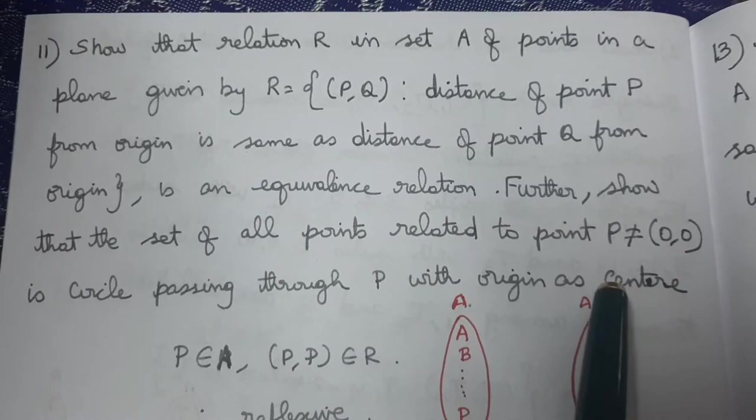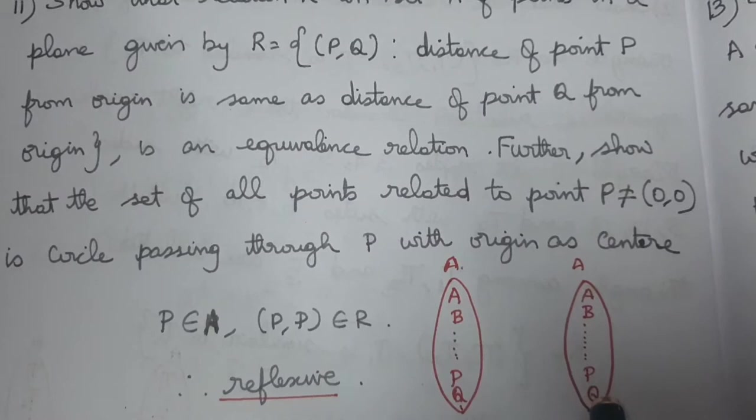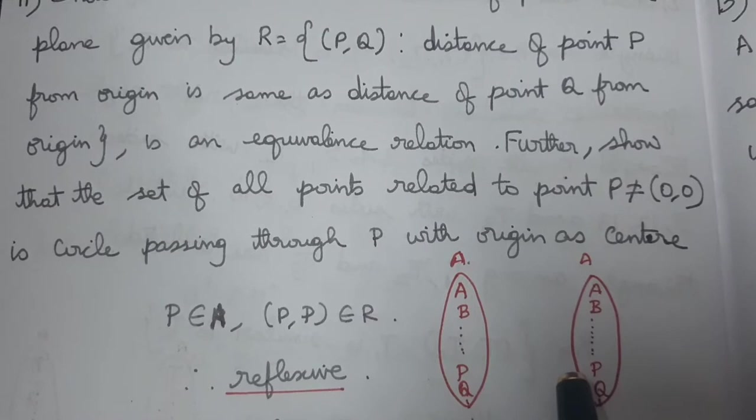So first of all, let's look at the set of points A: {A, B, C, D} and many points. The set {A, B, C, D} is the same as the set of points. Now the relation is (P, Q): P has the same distance from the origin as Q has from the origin.